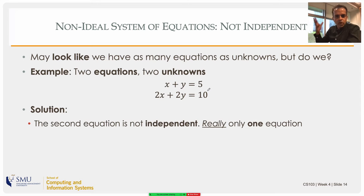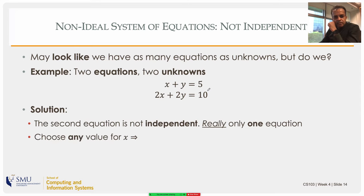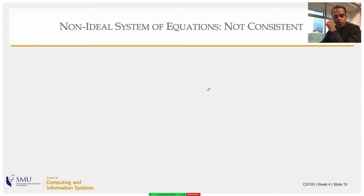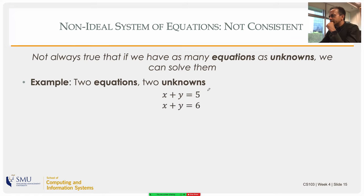These are dependent equations — not independent. There's only one real equation. Again, choose any value x equals t and any value that adds up to five will be a solution, giving an infinity of solutions.